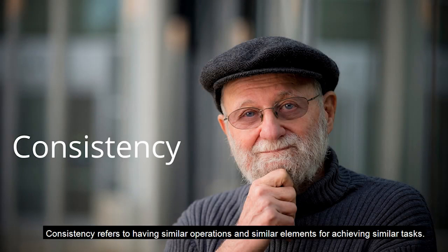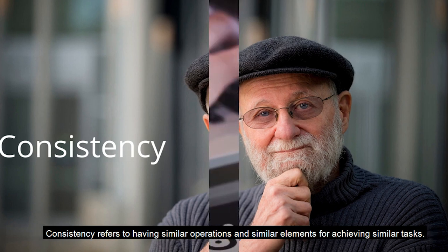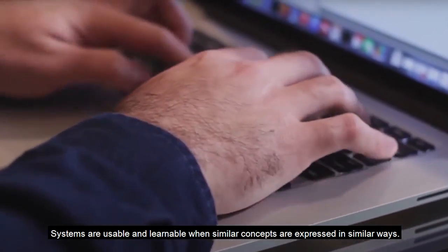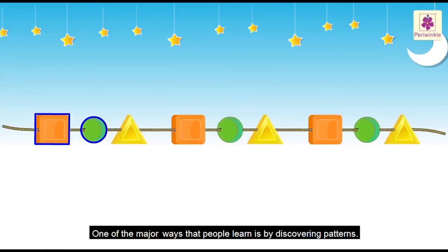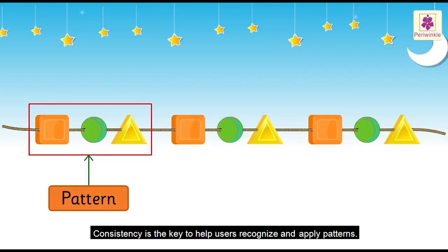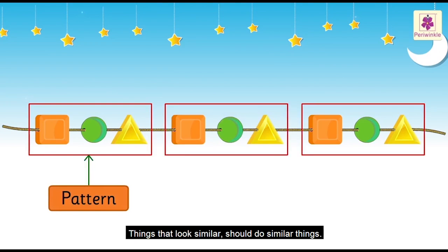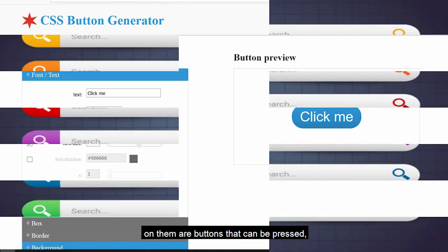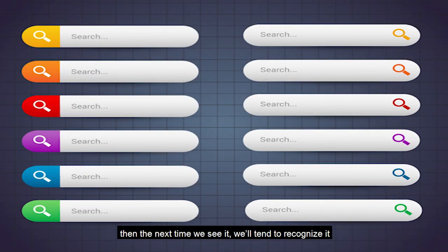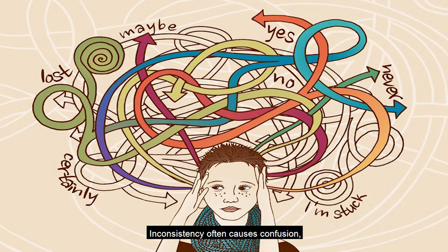Consistency refers to having similar operations and similar elements for achieving similar tasks. Systems are usable and learnable when similar concepts are expressed in similar ways. One of the major ways people learn is by discovering patterns, and consistency is key to helping users recognize and apply those patterns. Things that look similar should do similar things. For example, if we learn that protruding surfaces with labels on them are buttons that can be pressed, then the next time we see one, we will recognize it as a pressable button. Inconsistency causes confusion because things don't work the way the user expects.